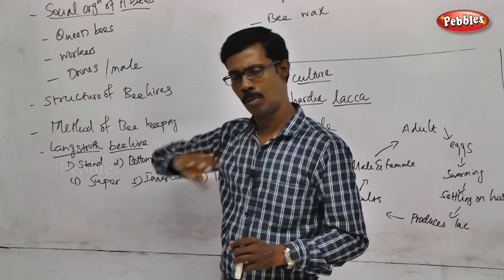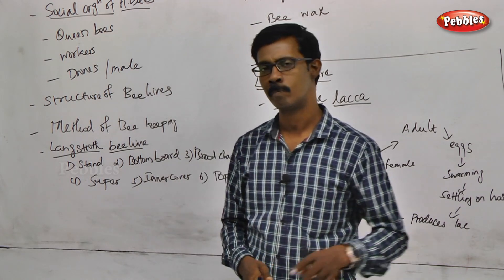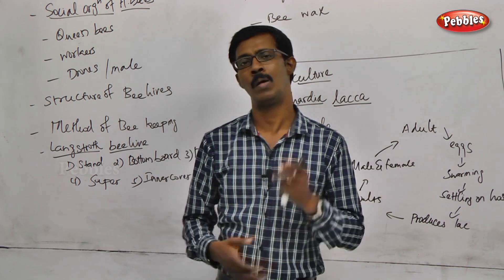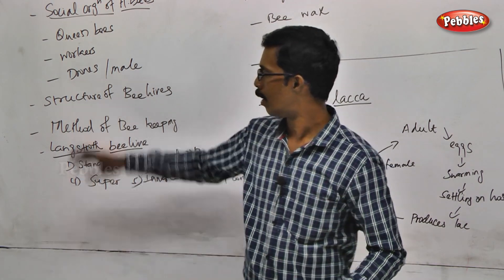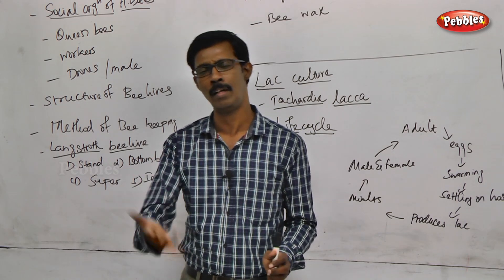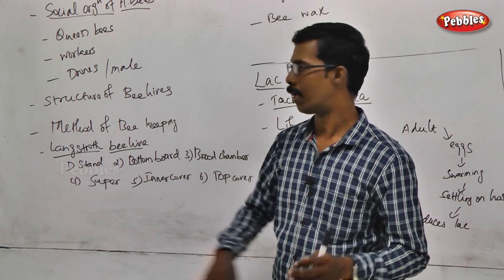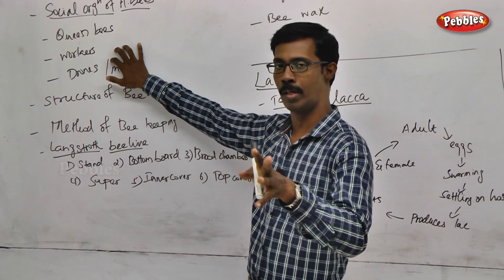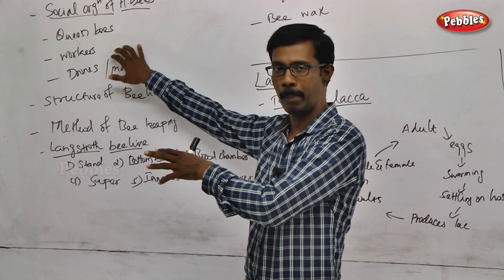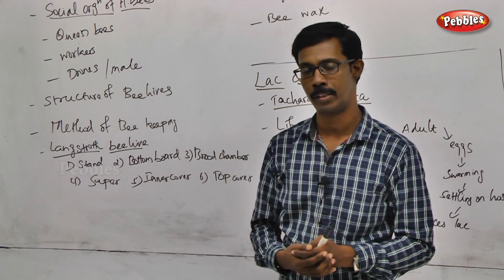Worker bees can also develop into a queen bee under certain conditions. If there is no queen bee in the hive, and if a worker bee larva is fed royal jelly, a new queen bee will develop. Then they will develop a new bee hive.